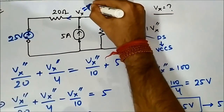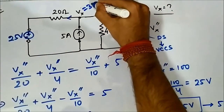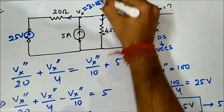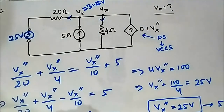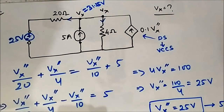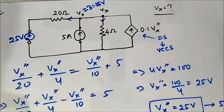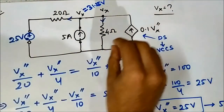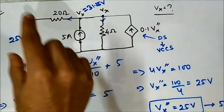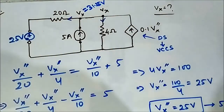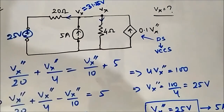The voltage Vx = 31.25 volts. This is calculated using superposition theorem for a circuit that involves both independent and dependent sources.